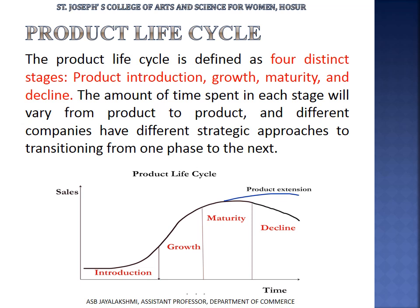The Product Lifecycle is defined as four distinct stages: product introduction, growth, maturity, and decline. The amount of time spent in each stage will vary from product to product, and different companies have different strategic approaches to transitioning from one phase to the next.